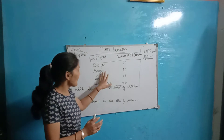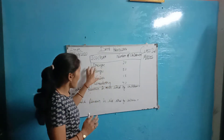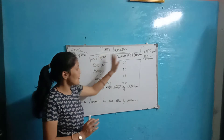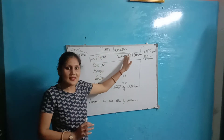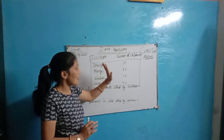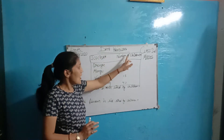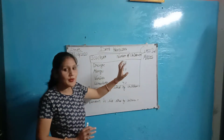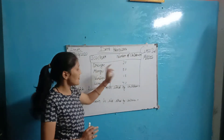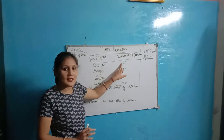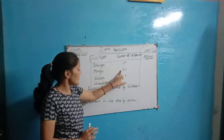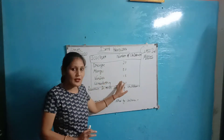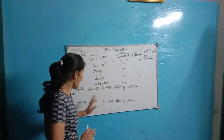Here is a question. There is an ice cream example with the number of children. The flavors of ice cream and how many children like each flavor: orange 20, mango 30, vanilla 50, and strawberry 40.